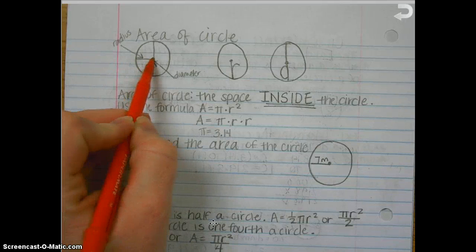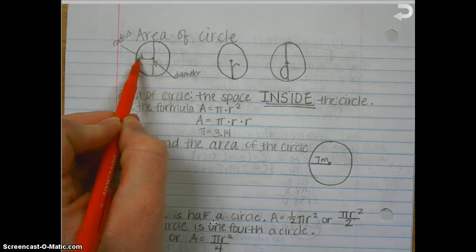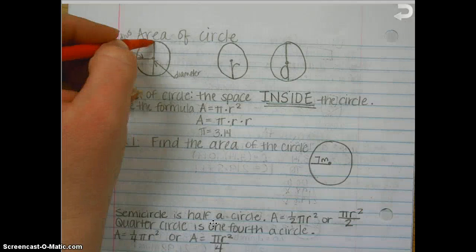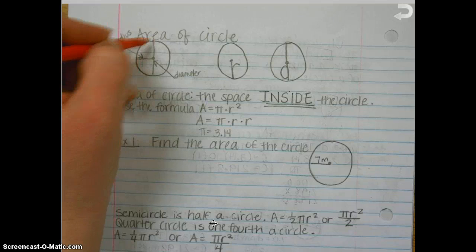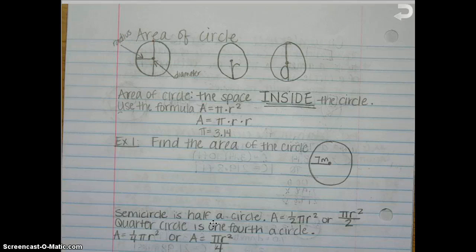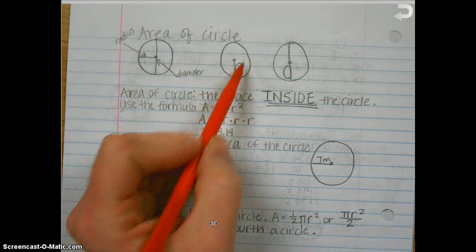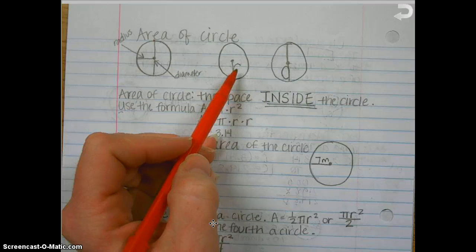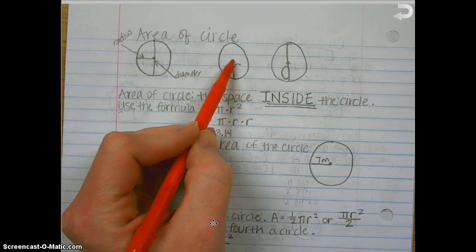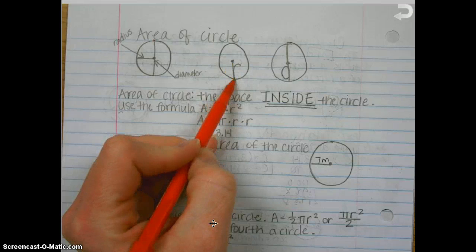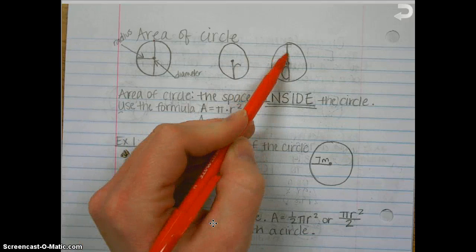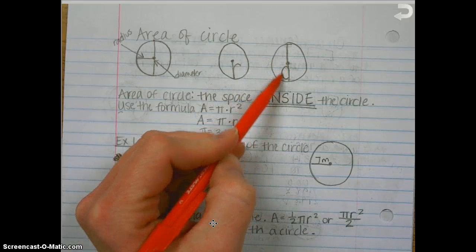This is the center of the circle. The radius goes from the center to the outside edge of a circle in any direction. The diameter goes from one side of the circle through the center all the way to the opposite side of the circle. An easy way to remember is that radius kind of looks like the letter R, and it goes halfway through the circle from the center to the outside edge. And the diameter goes all the way across, kind of like a little D.